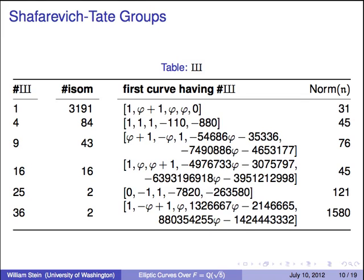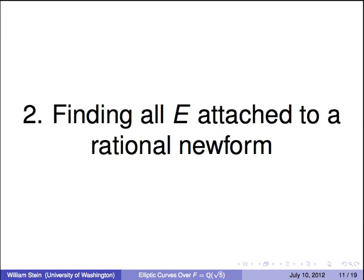Shafarevich-Tate groups. One point of this table is to emphasize that we computed all the invariants of all these curves, multiplied them together, and eventually managed to get numbers that were perfect squares. For example, there are 3,191 curves that have trivial Sha in our table. There were two curves that have Sha order 36. These are the conjectural orders of Sha. We did check in exactly one case that Sha had the conjectural order. It's pretty elaborate, but it's possible, in particular cases, to verify that Sha has the conjectural order.